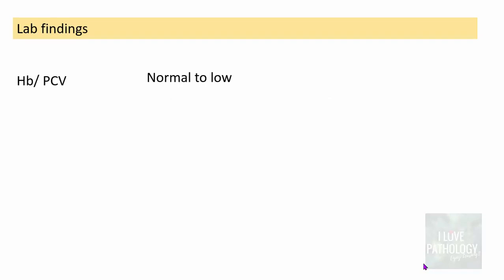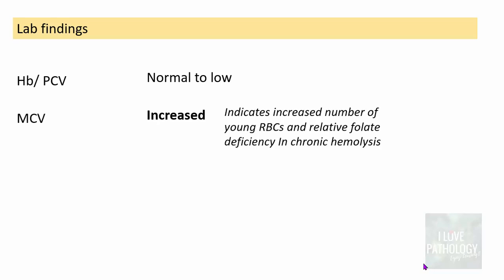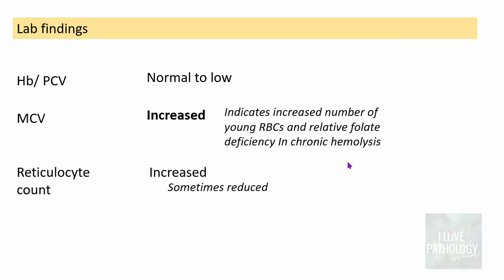Laboratory findings in warm antibody type IHA: hemoglobin can be either normal or low. MCV is increased, indicating a relatively young RBC population and reflecting relative folate deficiency due to chronic hemolysis. Reticulocyte count is increased, though sometimes it can be reduced.